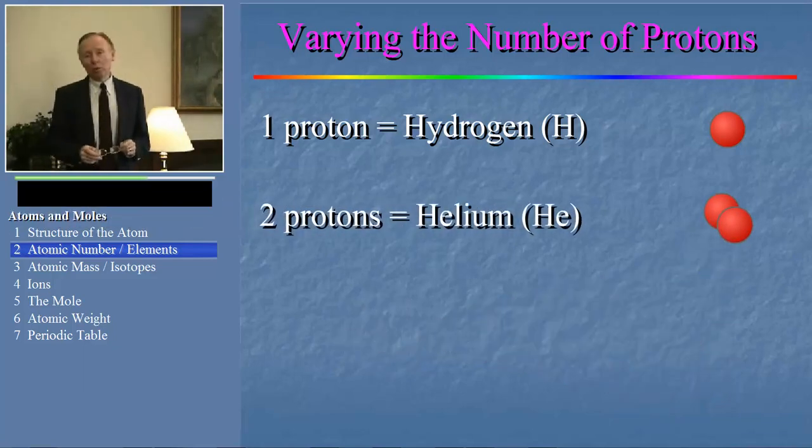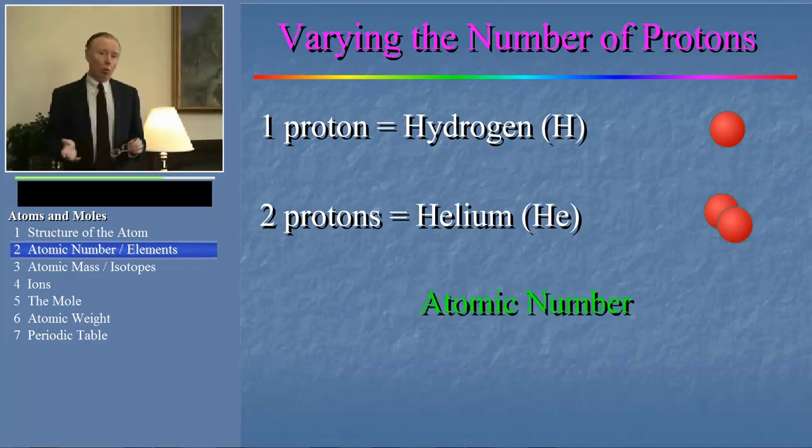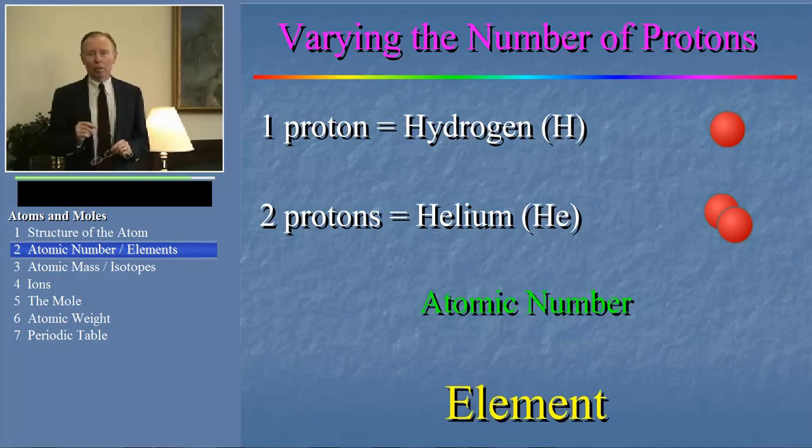The number of protons in the nucleus is so important that we give it a name itself. We call it the atomic number of the atom. So the atomic number of hydrogen is one. The atomic number of helium is two. Now the set of atoms that have the same atomic number is called an element. For example, hydrogen is an element, helium is an element, and so on.